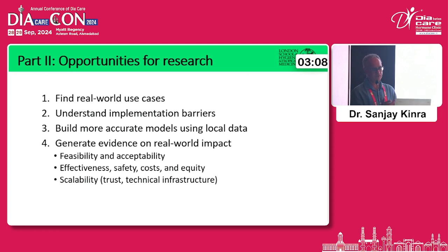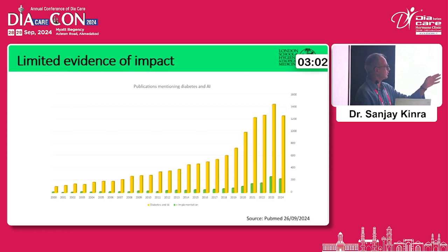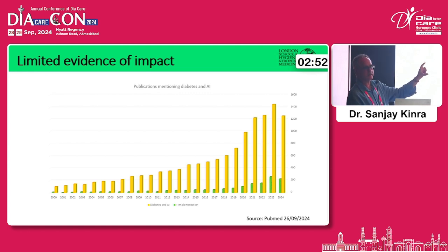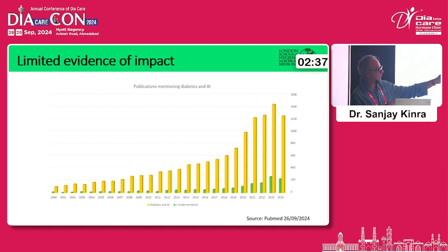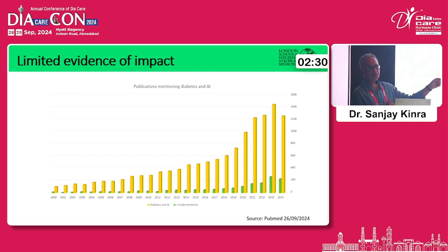Just to give a few examples: this is a chart of PubMed hits of studies involving diabetes and AI. The yellow bar is studies mentioning diabetes and AI; the green bar is implementation studies actually looking at real-world impact with patients — and that bar is really low, only around 200 studies. When you narrow it down to studies done in low- and middle-income countries like India, the bar is almost invisible. There are probably hardly any studies done in a context such as India that you can count on.